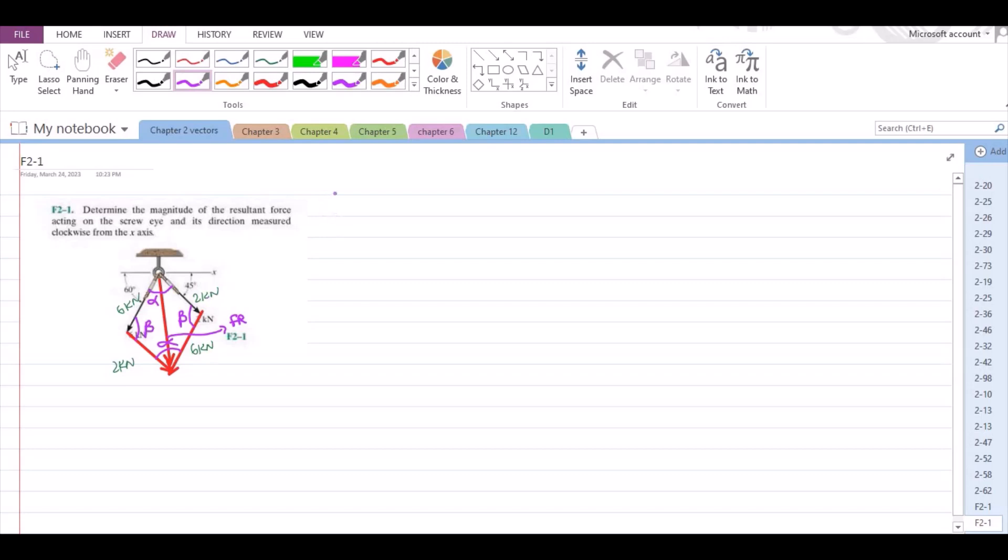Now, alpha would be found. For alpha, we have 60 plus 45 plus alpha is equal to 180 degrees because these three angles are forming a straight angle on the x-axis. So, from here alpha is equal to 75 degrees.